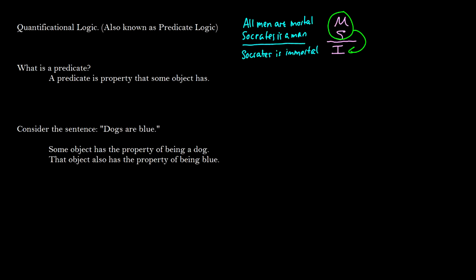We introduce things called predicates, and predicates are properties. If we pick an object x — some random object we don't know — and we have the sentence 'dogs are blue,' this object is going to have the property of being a dog and the property of being blue. So we can say that this x is a blue dog. That is what we mean by predicates.